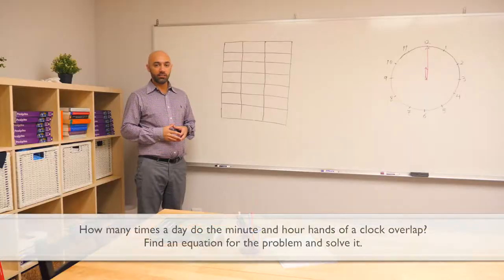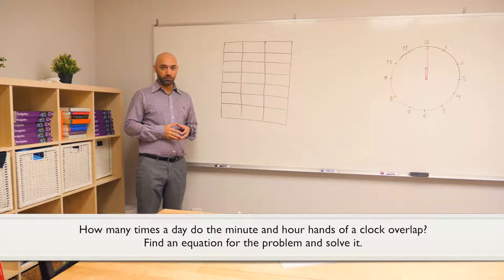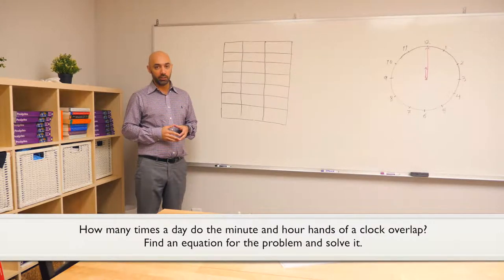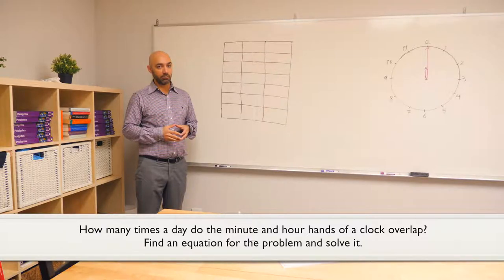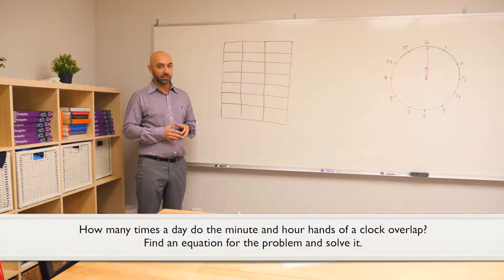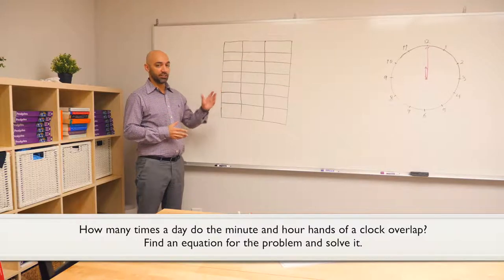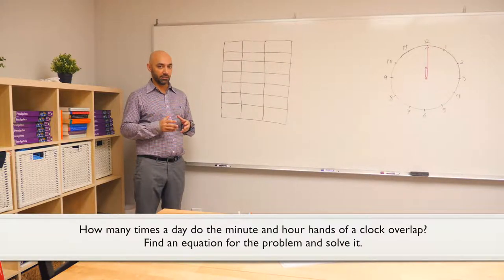We can think about this problem in terms of a running race between the minute and the hour hands of a clock, one running faster than the other and therefore catching up with it several times over the course of the entire race. Let's call the minute hand Mike and the hour hand Henry. To answer this question, we need to find a relationship between the number of laps ran by Mike, number of laps by Henry, and the number of overlaps. We are going to record that information in this table to see if there's a pattern in there.